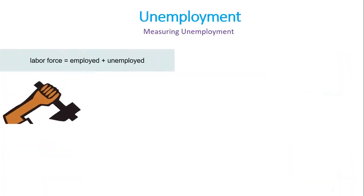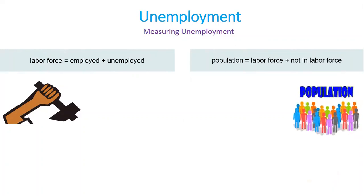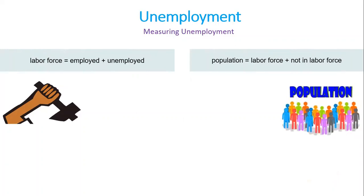When measuring unemployment, we also have to define labor force. Labor force is the sum of employed and unemployed. We also have the population: part of it is the labor force, and the other part is not in the labor force. Not in the labor force refers to a person who is not looking for work because they do not want a job or has given up looking.